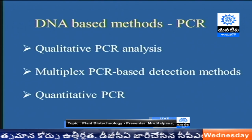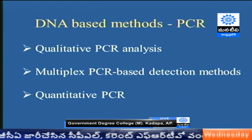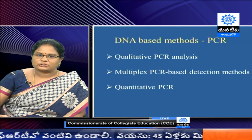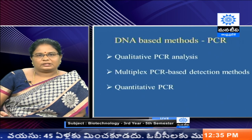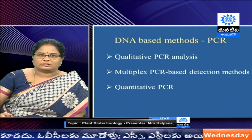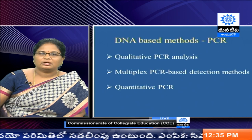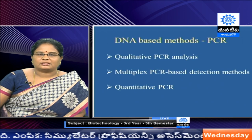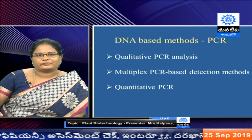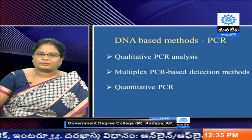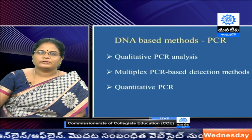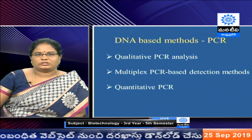All DNA-based methods depend on polymerase chain reaction. Within PCR, we have different types. The first is qualitative PCR — we simply see whether the amplified product is present or not. The second is multiplex PCR-based detection — we can detect more than one gene in a single reaction, so fewer reactions are needed. The third is quantitative PCR — we can quantify how much DNA is amplified. These three basic PCR methods are used to identify the transgene in a putative transgenic plant.